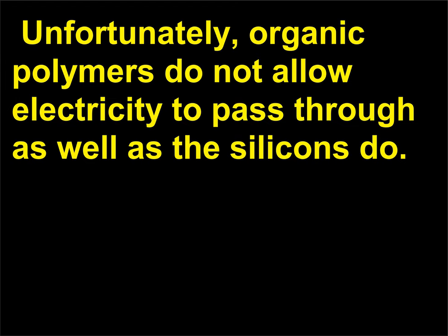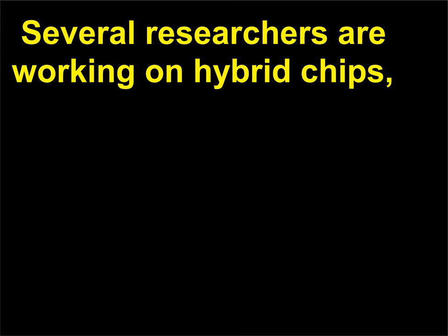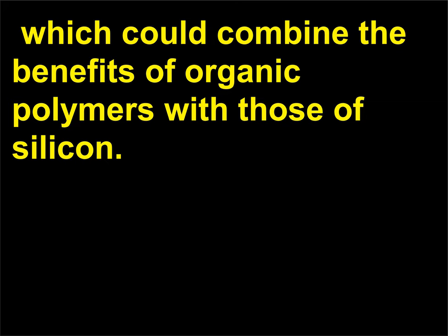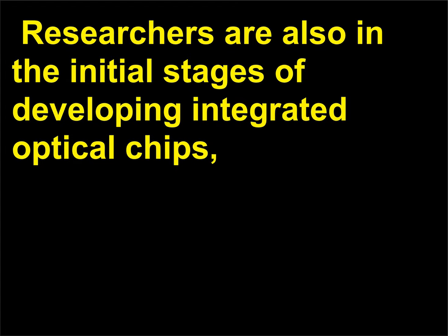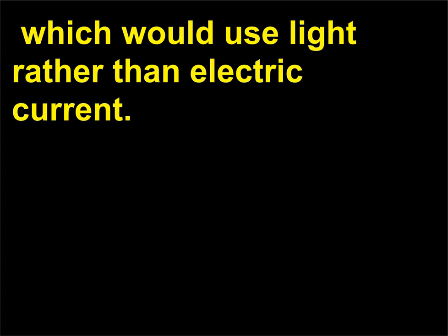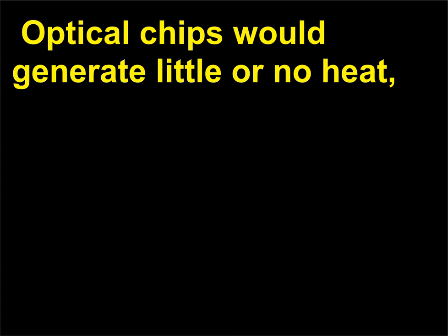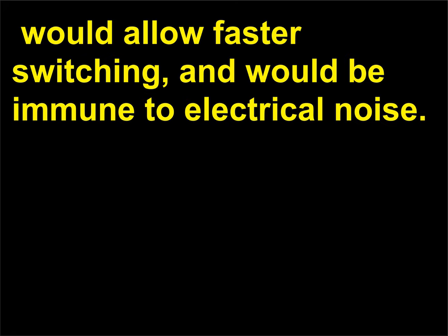Unfortunately, organic polymers do not allow electricity to pass through as well as silicon does. Several researchers are working on hybrid chips, which could combine the benefits of organic polymers with those of silicon. Researchers are also in the initial stages of developing integrated optical chips, which would use light rather than electric current. Optical chips would generate little or no heat, would allow faster switching, and would be immune to electrical noise.